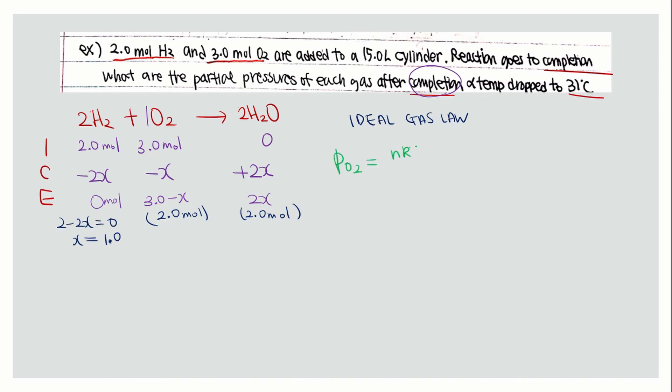Pressure equals nRT over V. You have 2 moles, using the R value for atm times 31 degrees plus 273, which gives you 304 Kelvin, over the volume of 15.0 liters, which gives pressure of 3.3 atm. We have two sig figs because the question gave you two sig figs.